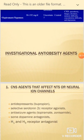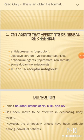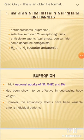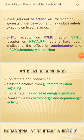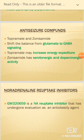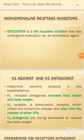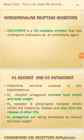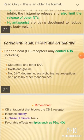Newer anti-obesity agents under investigation include CNS agents affecting ion channels, antidepressants, serotonin 2C receptor agonists, anticonvulsant agents, and histamine receptor antagonists. Anti-seizure compounds under investigation include topiramate and zonisamide. Noradrenaline reuptake inhibitors and cannabinoid receptor antagonists are also under investigation.